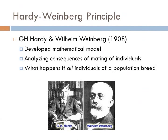These people were an Englishman, G.H. Hardy, and a German, Wilhelm Weinberg. These two chaps both developed a mathematical model in order to analyze the consequences of when individuals of a population mate.